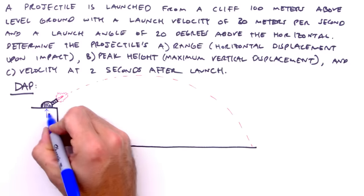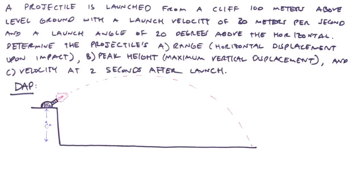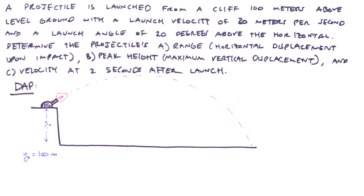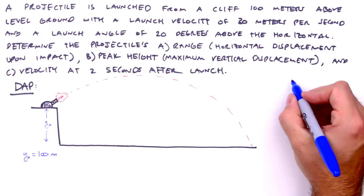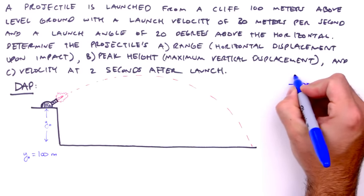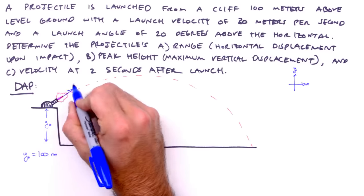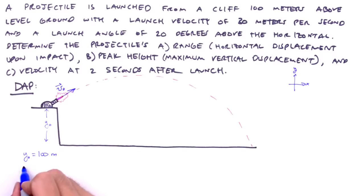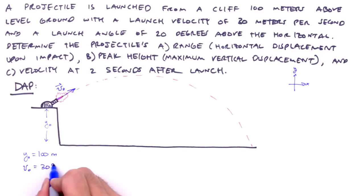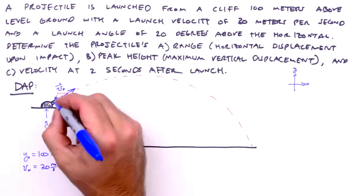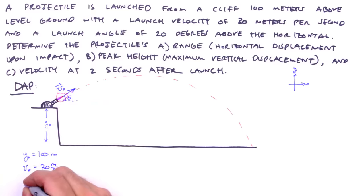So what are our knowns and unknowns? To start, we're given the height of the cliff, which is to say the initial vertical displacement, and that's 100 meters. We've already implied our coordinate system, but we need to be explicit and include it on our drawing. Next, we're given the magnitude of the launch velocity — the initial speed of our projectile — 30 meters per second. We're also given the direction of the launch velocity, so we'll label the angle between the velocity vector and the horizontal as theta, and theta is equal to 20 degrees.